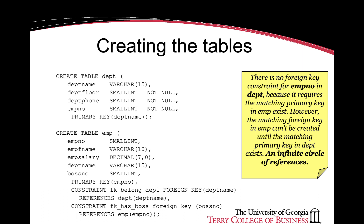When we are creating the employee table, we will have two constraints: the usual one-to-many constraint on department name as a foreign key indicating which department an employee belongs to, and the second constraint is on the value of employee number present in the same table as the column boss number. The values of boss number should correspond to values of employee number already present as a primary key.